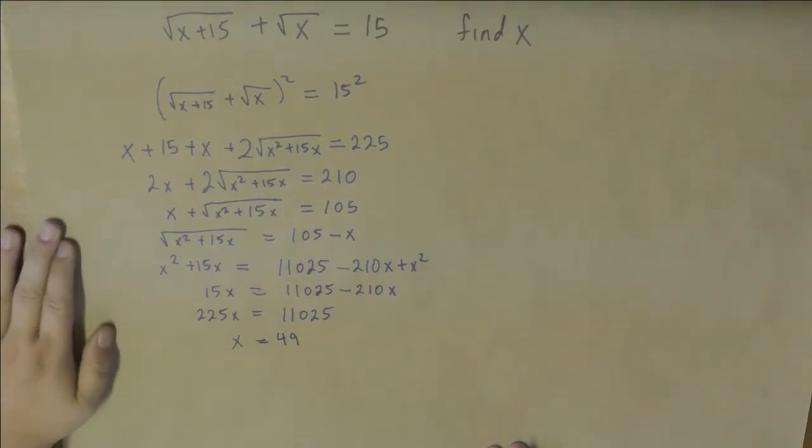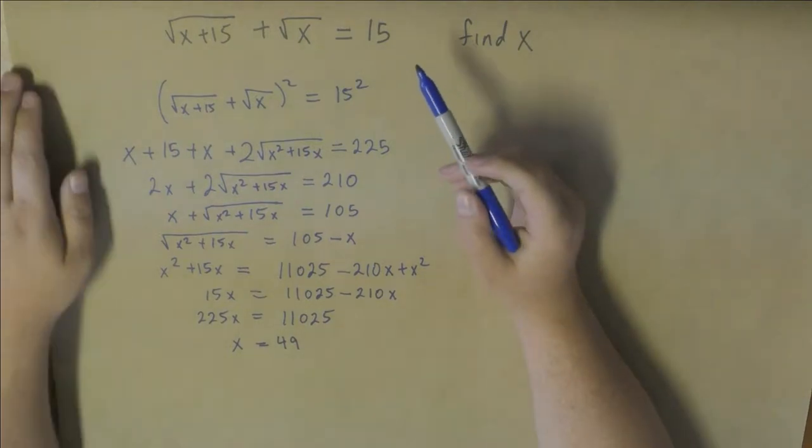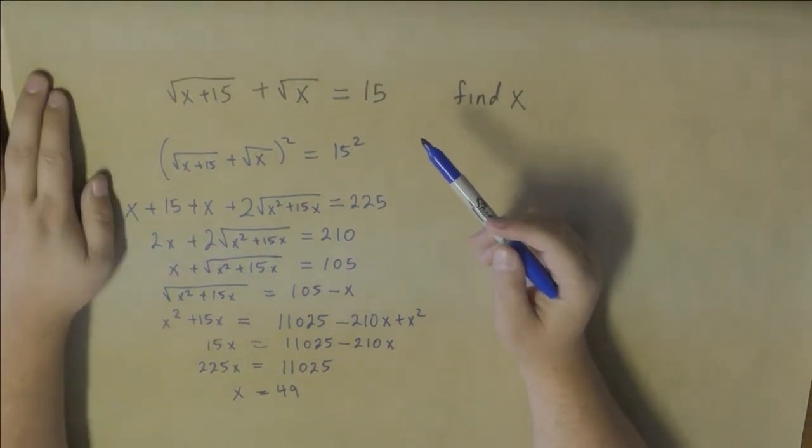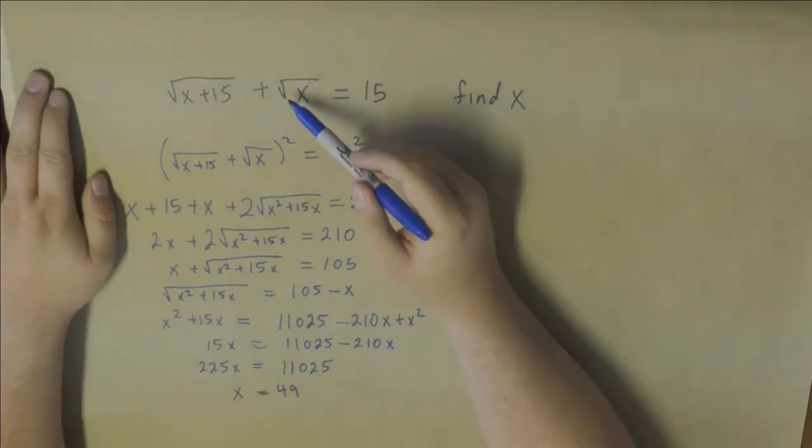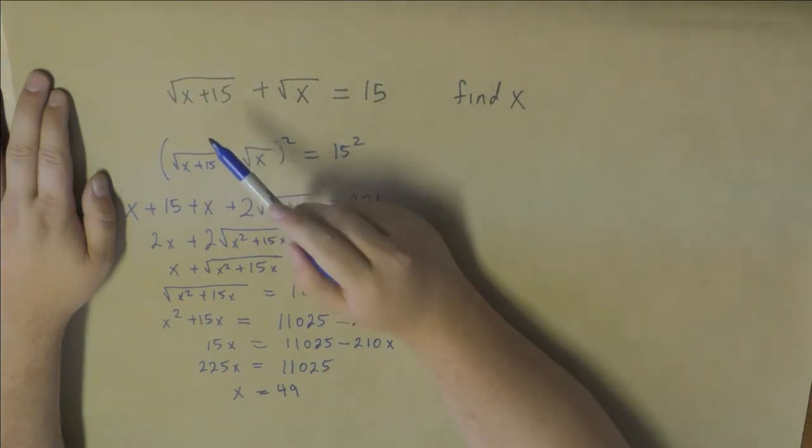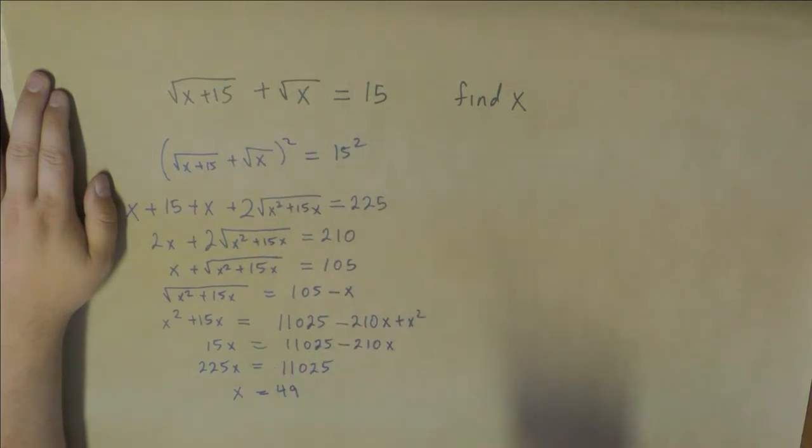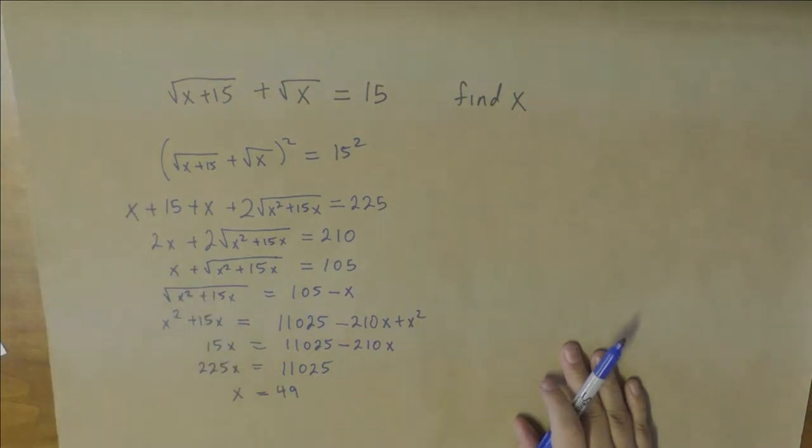If we add the 210x to both sides, we get 225x equals 11,025. We just have to divide both sides by 225, and we get x equals 49. So that tells us that x is 49. Is this right? Well, if we put 49 in for x in our original equation, we get the square root of 49 here for the root x. That's 7. We add 15 to 49, we get 64. The square root of 64 is 8. 8 plus 7 is 15. So that gives us a correct solution.